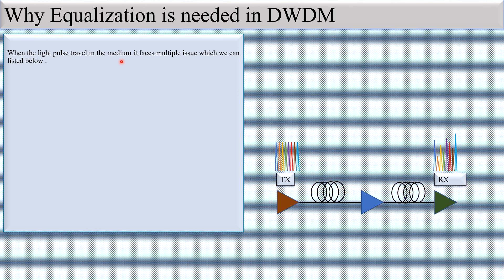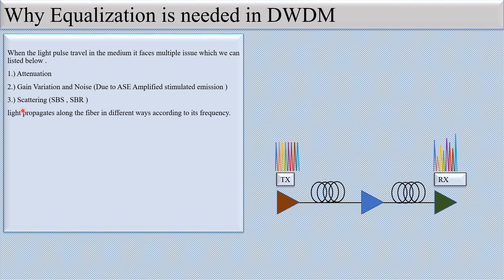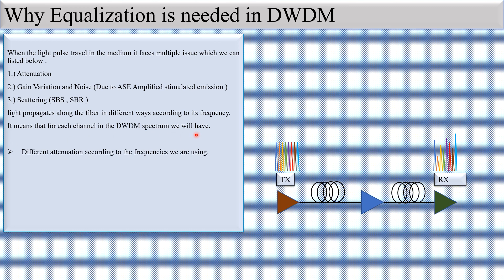When the light pulse travels in the medium it faces multiple issues. The first is attenuation, the second is gain variation and noise, and the third is scattering — either SBS or SRS. Light propagates along the fiber in different ways according to its frequency, meaning for each channel in the DWDM spectrum we will have different attenuation according to the frequencies being used.